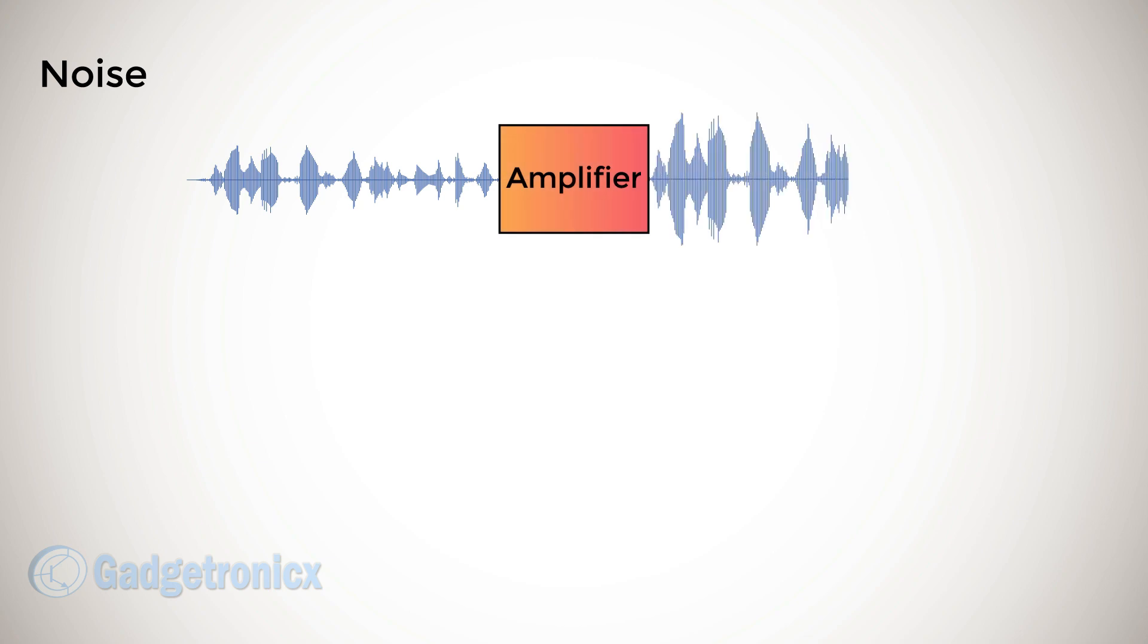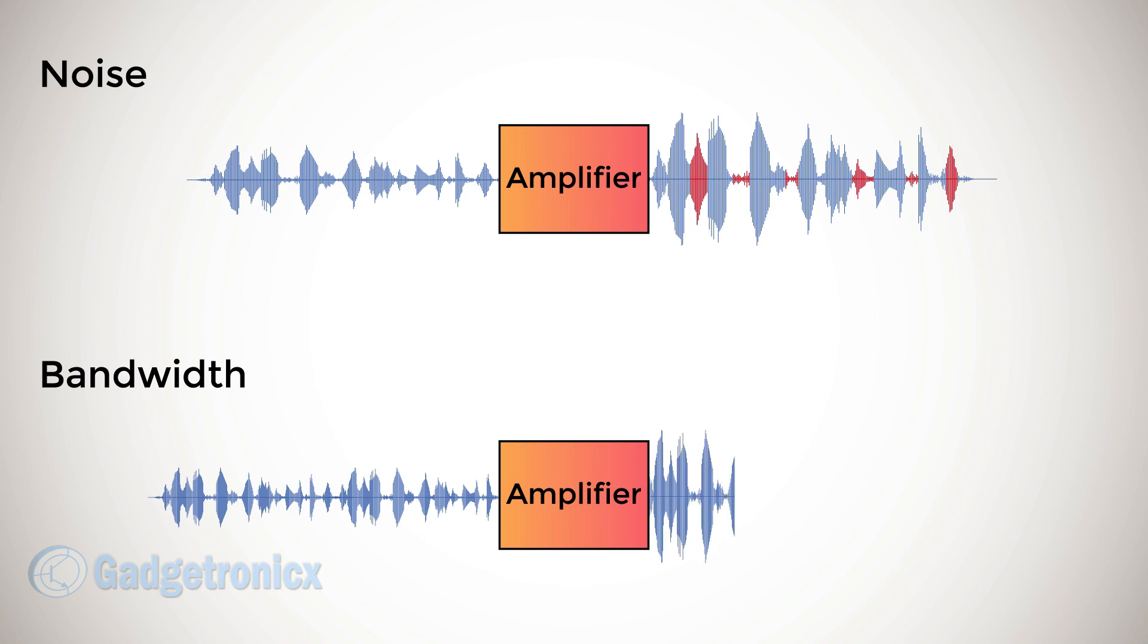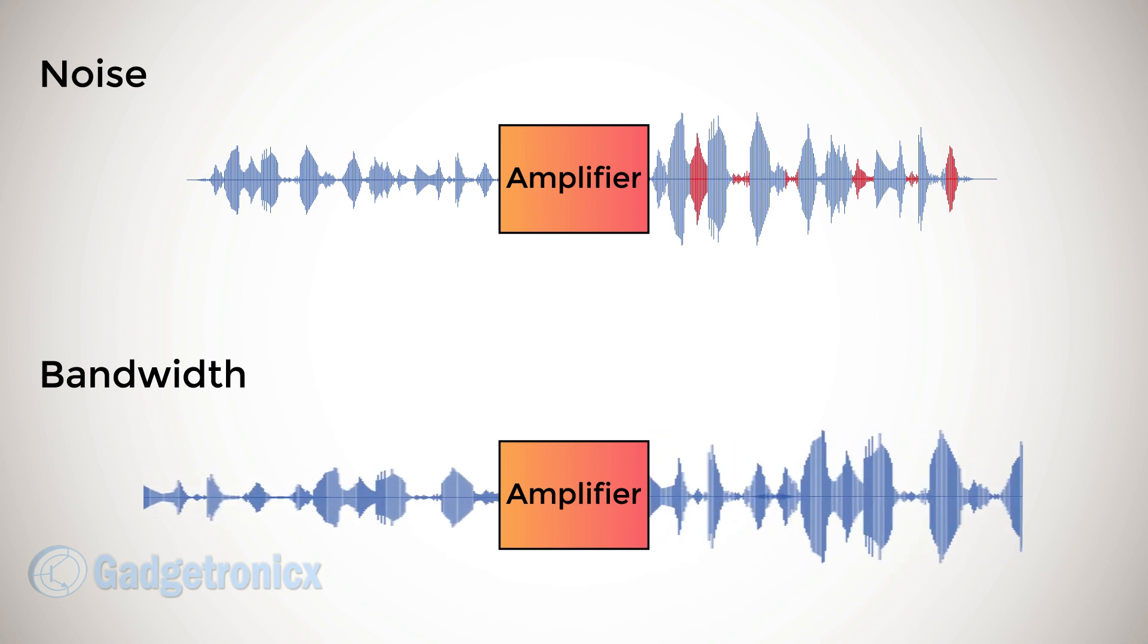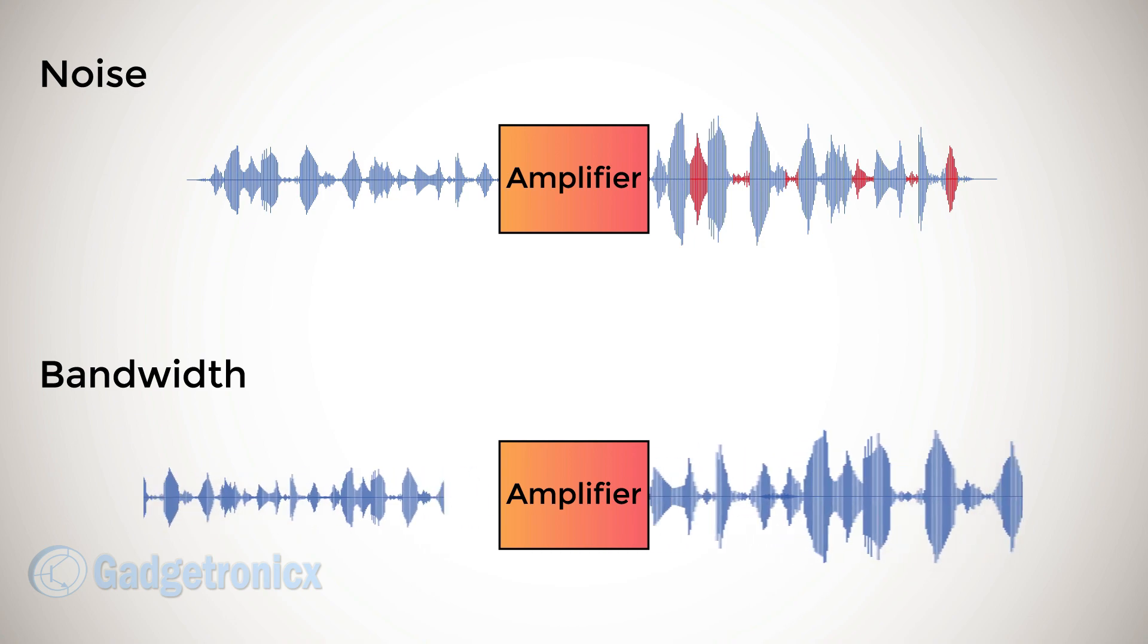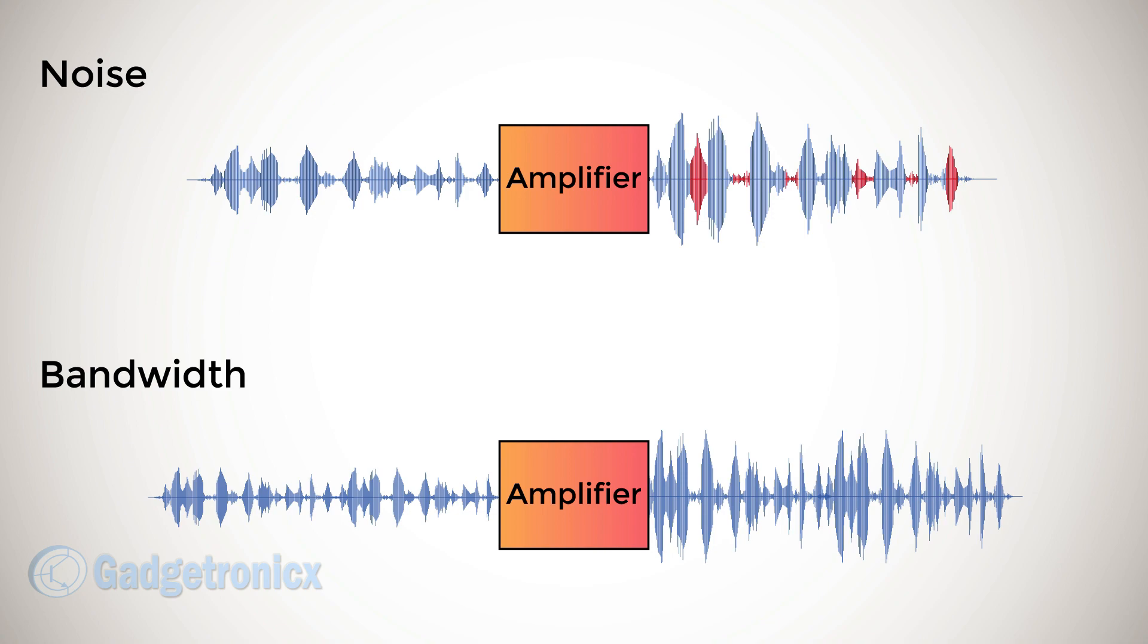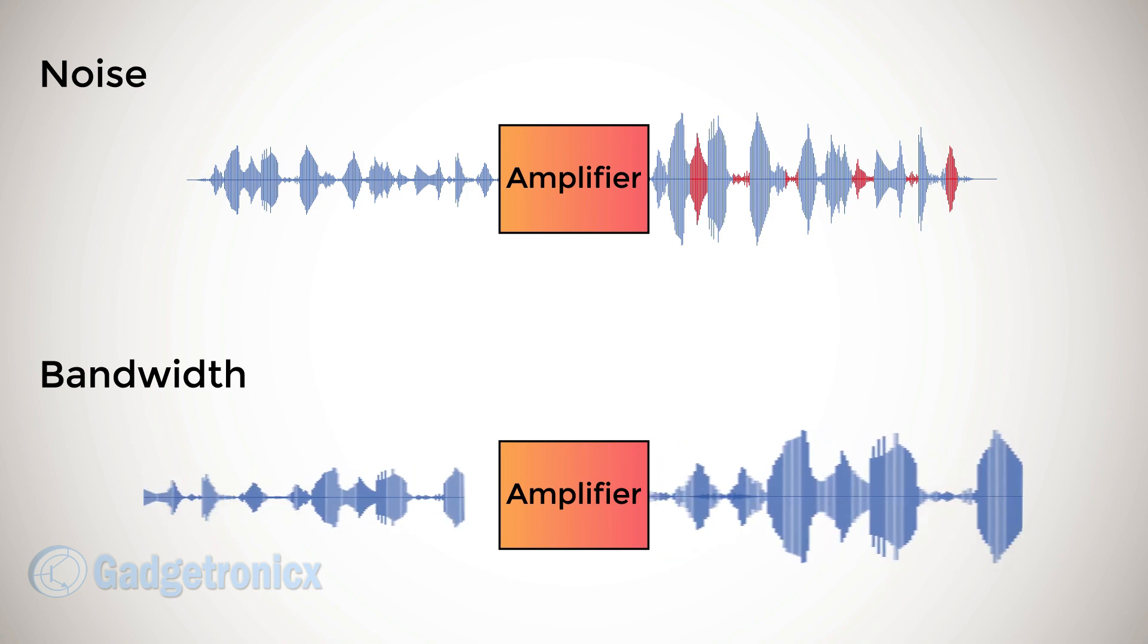Noise: A measure of an amplifier to amplify input signals without introducing undesired signals in it. Bandwidth: The range of input signal frequencies within which an amplifier can effectively amplify. It can also be described as the range of input signal frequency within which an amplifier will operate.